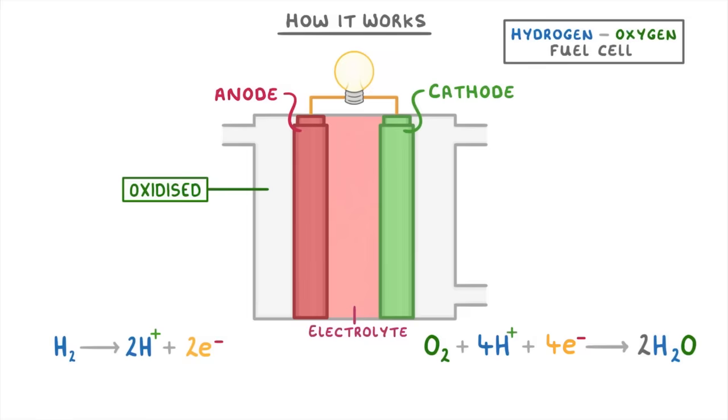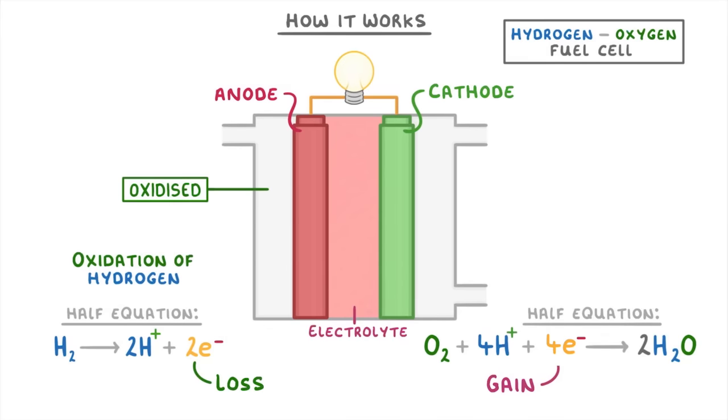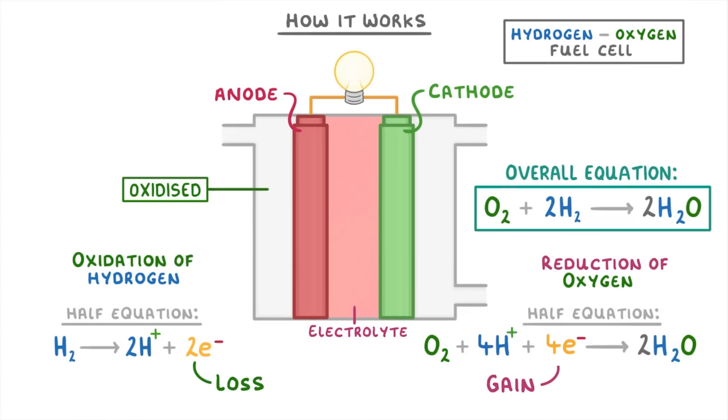Now, these two equations that we have here are known as half equations, because they show the loss or gain of electrons. In our case, they show the oxidation of hydrogen and the reduction of oxygen. And if we combine these two equations, we'd get this overall equation, which shows that we've combined oxygen and hydrogen to make water.